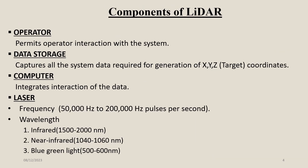The components of LIDAR include: an Operator that permits operator interaction with the system; Data Storage that captures all system data required for generating XYZ target coordinates; a Computer that integrates interaction of the data; and a Laser operating at 50,000 to 200,000 Hz pulses per second, with wavelengths of 1500–2000 nm (infrared), 1040–1060 nm (near infrared), and 500–600 nm (blue-green light).